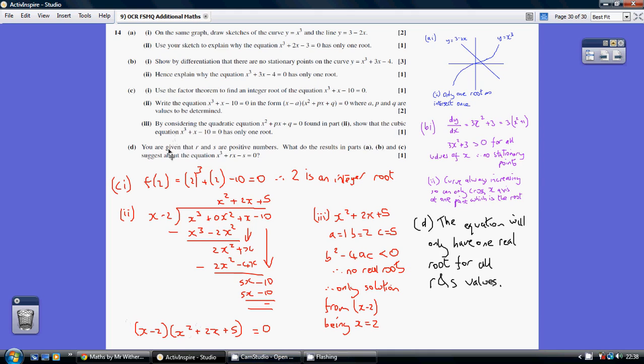Now, for part 3, by considering this bit, so this bit, what does it say? Let's show that the quadratic has only one root. Now, the point is, with this bracket here, there are no real roots. If we work out the discriminant of this, the b squared minus 4ac, it is less than 0, so no real solutions come out of this.